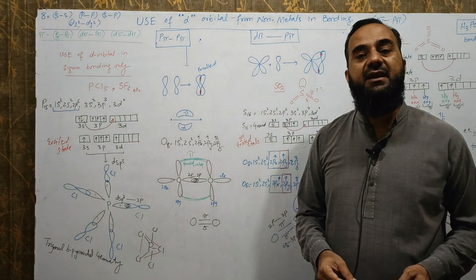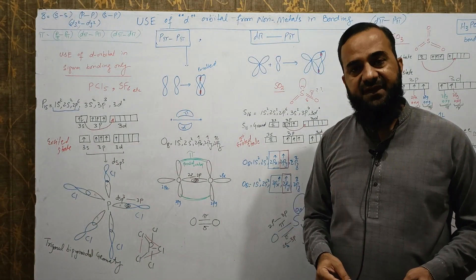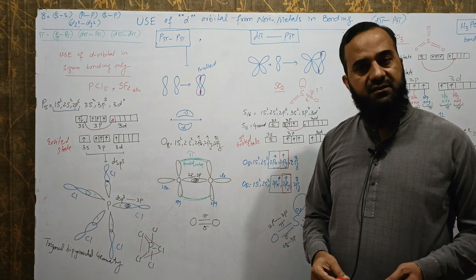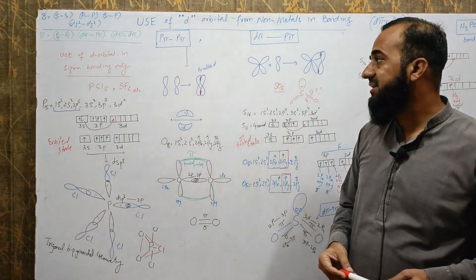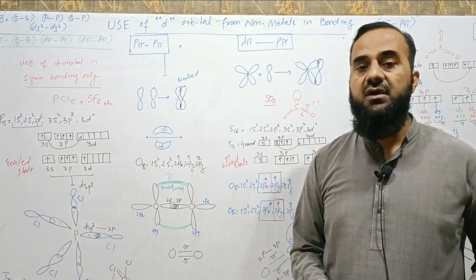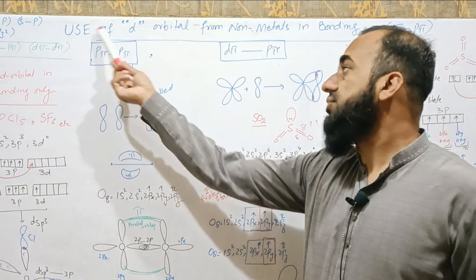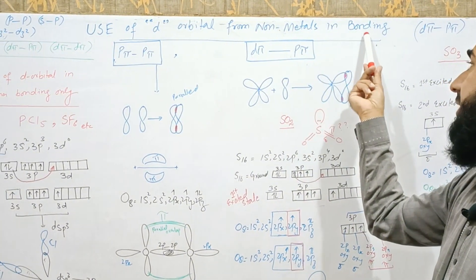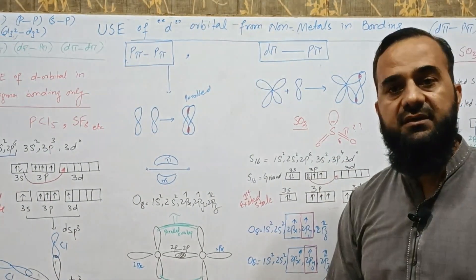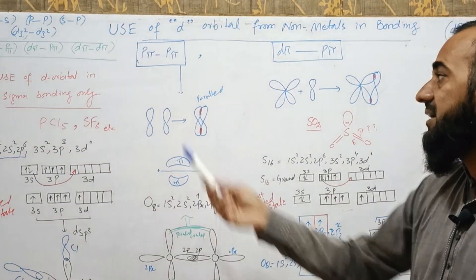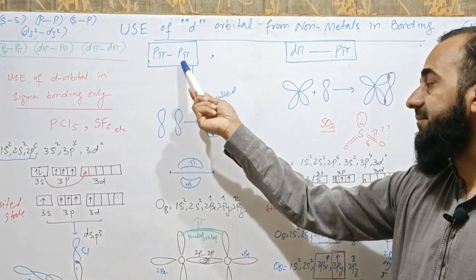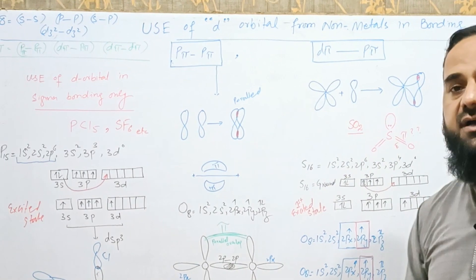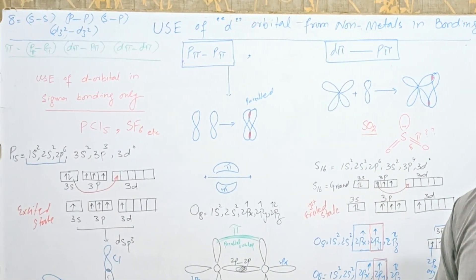Bismillahirrahmanirrahim. In the previous video I discussed polyhalide ions and their compounds. Today I am going to discuss a special type of bonding: the use of d orbitals from non-metals in bonding, and also pπpπ along with dπpπ and dπdπ types of bonding.